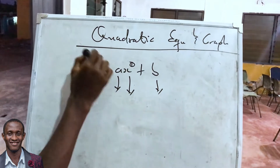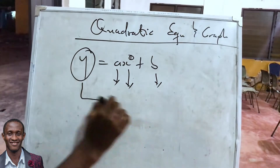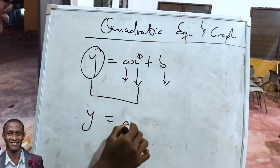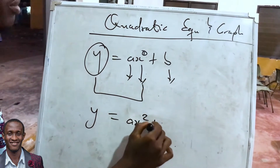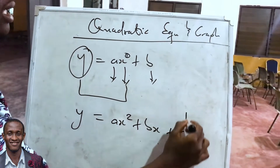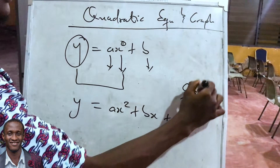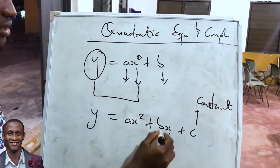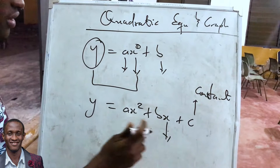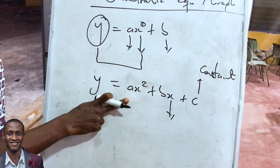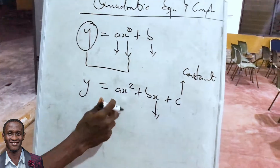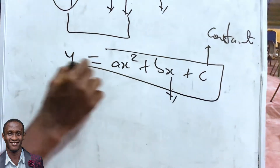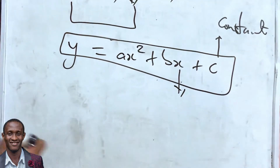So y is expressed in terms of variable x. When you have y = ax² + bx + c, where c is a constant, a is the coefficient of x², and b is the coefficient of x, we say the equation is quadratic.